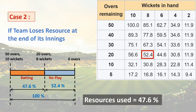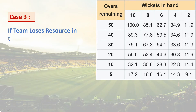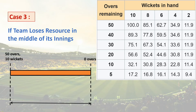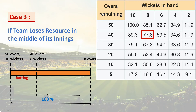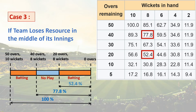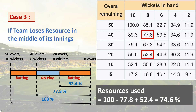In Case 3 — resource loss in the middle of innings — say the first interruption occurs when 40 overs and 8 wickets were left, giving a resource percentage of 77.8%. After some overs are reduced, play resumes with 20 overs remaining, giving a resource percentage of 52.4%. The net resources used for batting become 100 − 77.8 + 52.4 = 74.6%. Multiple interruptions must be handled in a similar way.